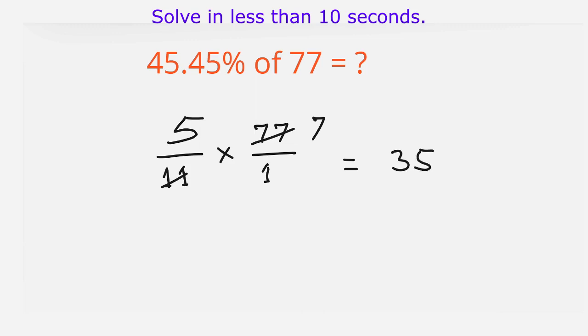Thus, 45.45% of 77 is 35. This you can solve orally if you are able to convert the percent into fraction.